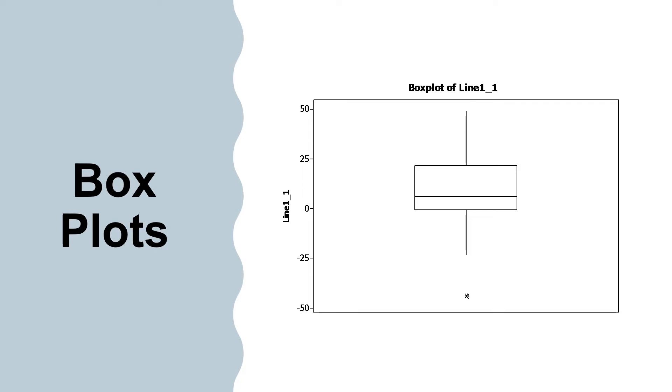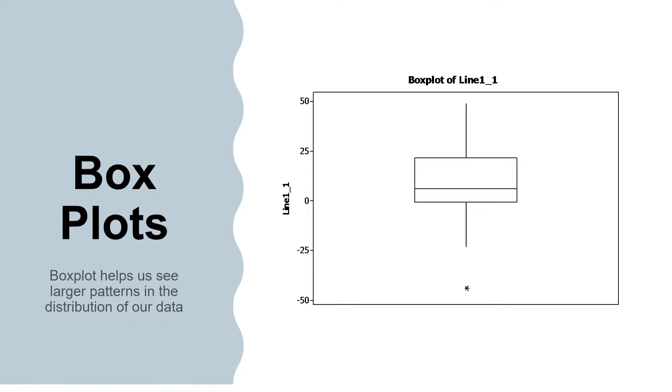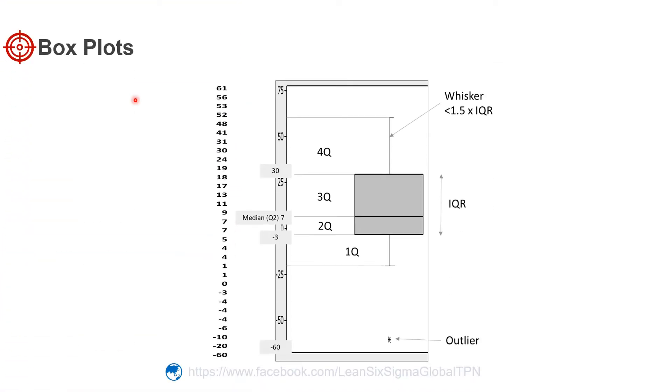So let's look at another graph - the box plot. Box plots help us see larger patterns in the distribution of our data. Let's look at how a box plot is constructed. Start with an individual value plot and divide the data points into four equal parts or quarters.